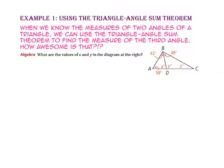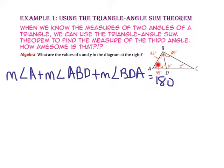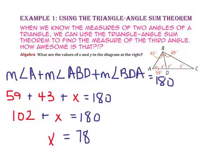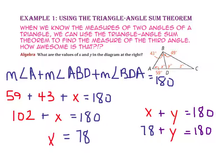Let's start by writing our geometry equation. Substitute 59 degrees for the measure of angle A, 43 degrees for the measure of angle ABD, and X for the measure of angle BDA. Combine like terms to get 102 plus X equals 180. Using the subtraction property of equality, subtract 102 from both sides, so X equals 78. Since angle ADB and angle BDC form a linear pair, X plus Y will equal 180. Substituting 78 for X gives 78 plus Y equals 180, so Y equals 102.